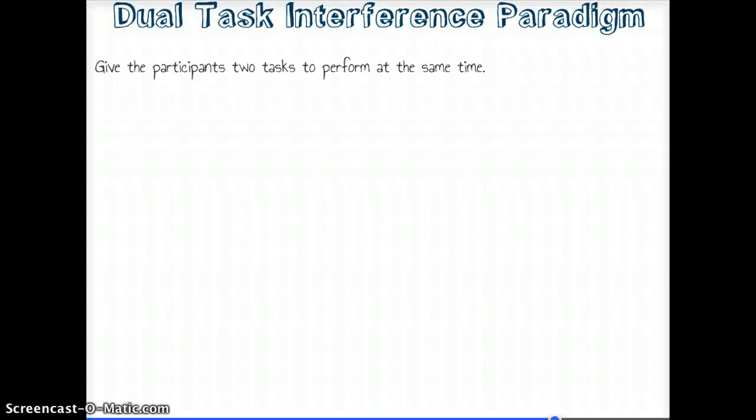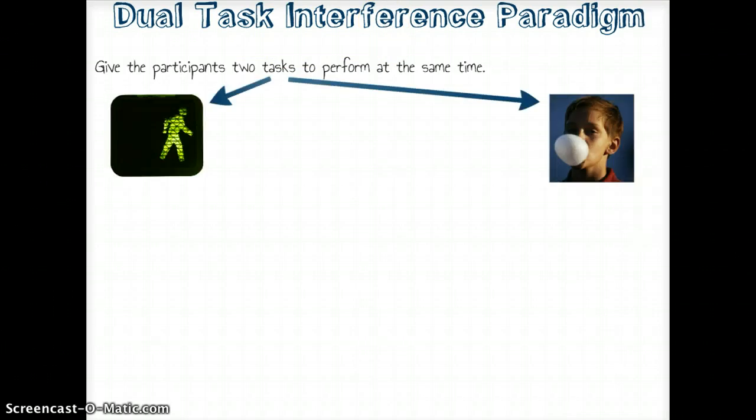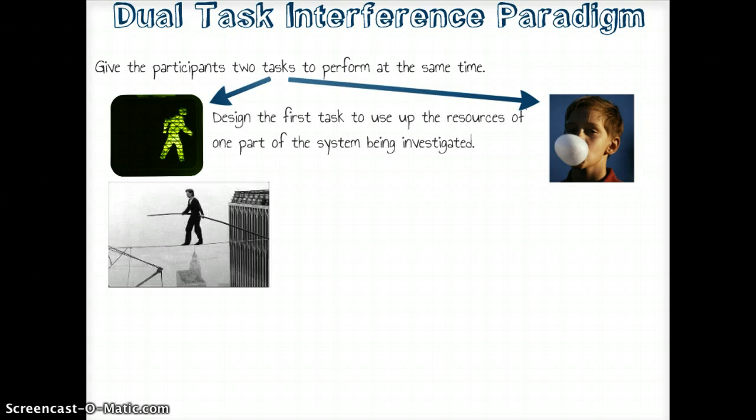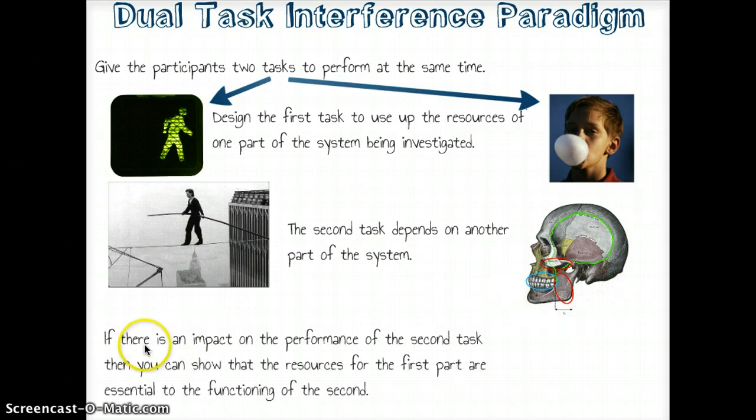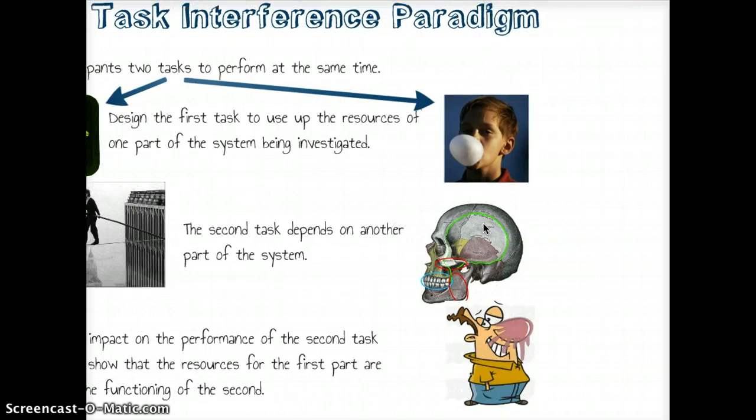It's like this: give the participant two tasks to perform at the same time - dual tasks. Hopefully they will interfere with one another. I can ask you to walk and chew gum, something I find difficult. Especially if I make the first task, the walking task, really complicated - put it on a tightrope. It's going to use up a lot of the resources, kinesthetic resources required to do this process. The second task should depend on another part of the system. In this case, I'm thinking about the biological system. Walking depends on feet and ears for balance. Chewing gum depends on your lower jaw and teeth. If there's an impact on the performance of the second task, the gum chewing task, you can then claim that the first task's resources were useful in the completion of the second task. There's the decrement in performance.